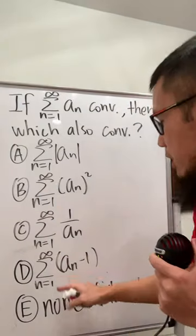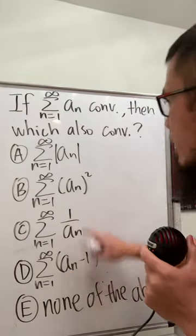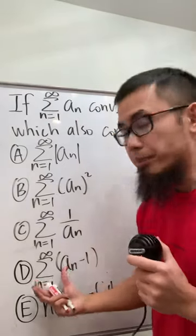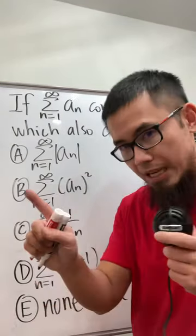A lot of my students chose D because they thought a_n minus 1 is less than a_n, so that should mean this also converges, right? That's actually not correct.